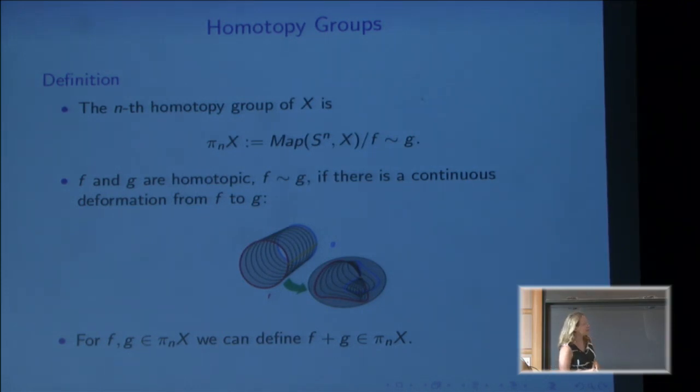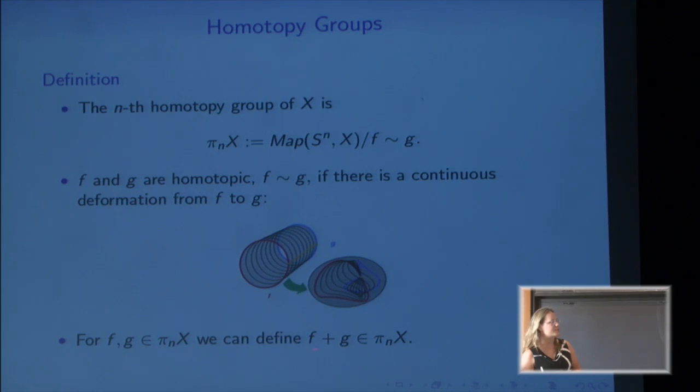Here's a few basic definitions. If we have a topological space X, we can consider continuous maps from a sphere S^n to X, where we quotient by identifying two maps if they're homotopic. That is the homotopy group of X. Two maps are homotopic if there's a continuous deformation from one to the other. This picture roughly represents a map f and a map g, and this cylinder represents a continuous deformation from f to g. Homotopy groups are groups, so given two maps from S^n to X we can define the sum which will also be a map from S^n to X.